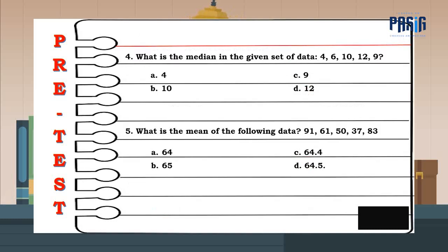Number 4. What is the median in the given set of data? 4, 6, 10, 12, 9. The answer is letter C. Number 5. What is the mean of the following data? 91, 61, 50, 37, 83. The answer is letter C.